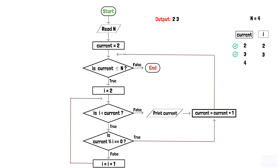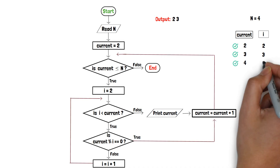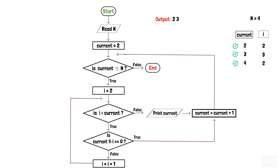As 4 is less than or equal to 4, the condition inside the first decision box is again true. Additionally, 2 is less than current, which is 4, so the second decision box is also true. Moreover, 4 modulo 2 equals 0, so current is incremented to 5 and again sent towards the first decision box. At this point, 5 is not less than or equal to n, which is 4. Thus, the condition inside the first decision box becomes false and the program is terminated.